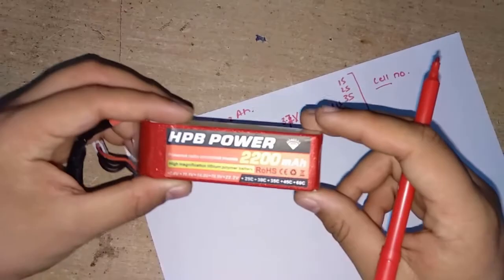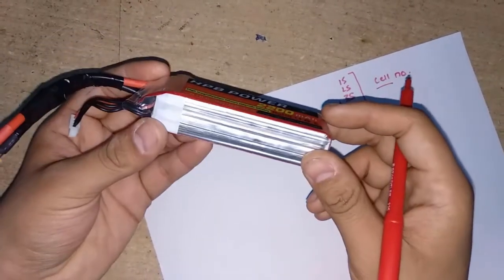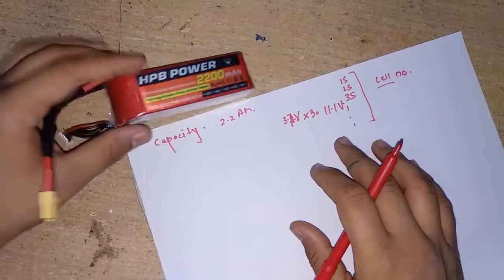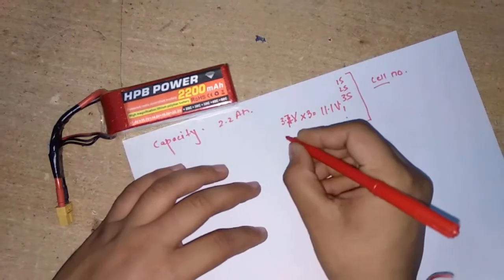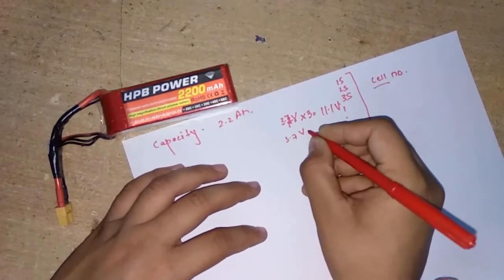Sometimes it's packed in a case so you can't see all the cells. Even your mobile phone batteries are made this way, but they are only 3.7 volt because it's a single cell battery.